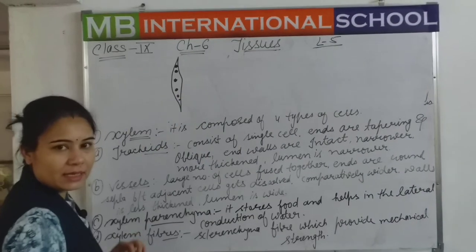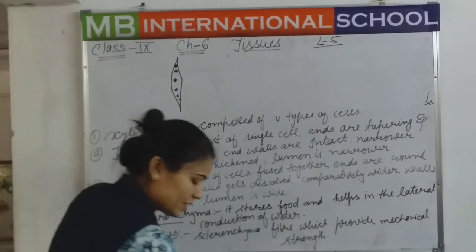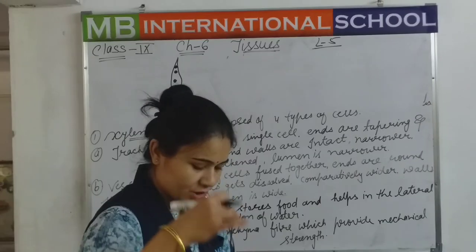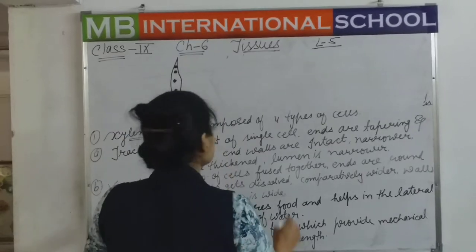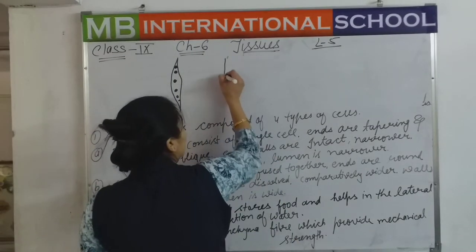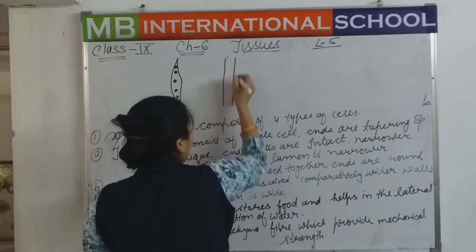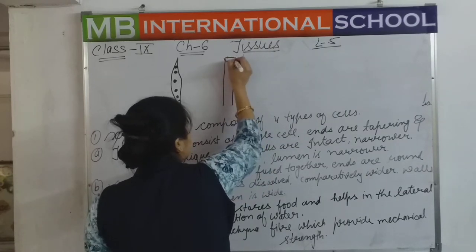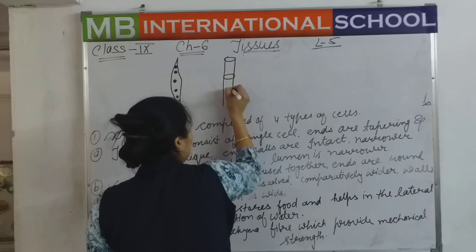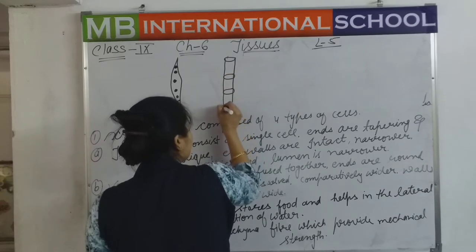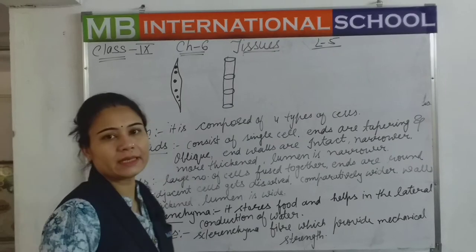These are the basic structures of tracheids. This is the normal structure of tracheids. Vessels are wider comparatively — in comparison to tracheids, vessels are broad and wider.